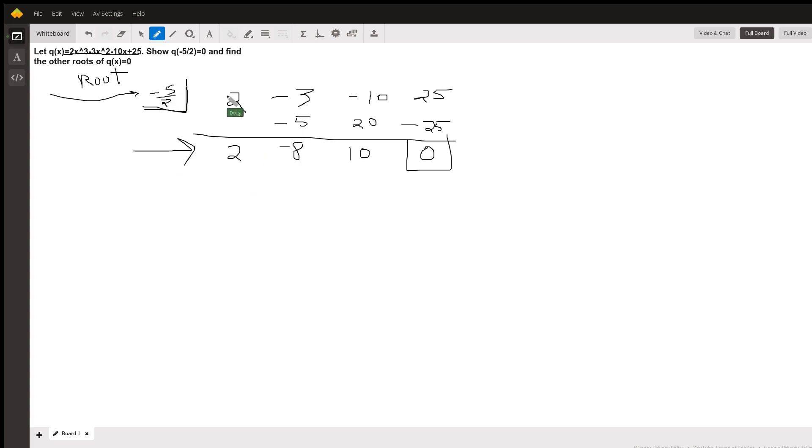So how do you do synthetic division? Well, bring down this first coefficient, multiply negative five halves times two, write the result here, add, multiply, add, multiply, add.